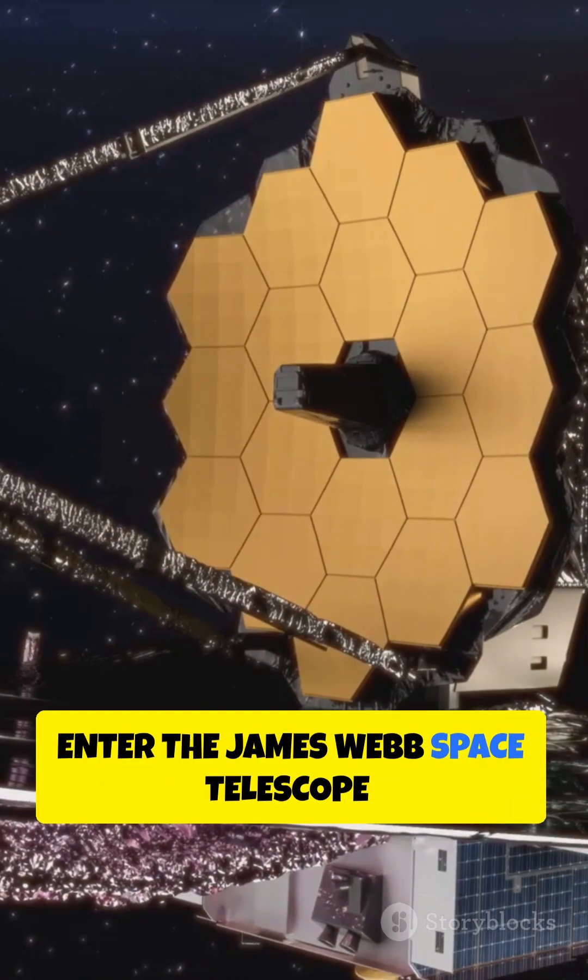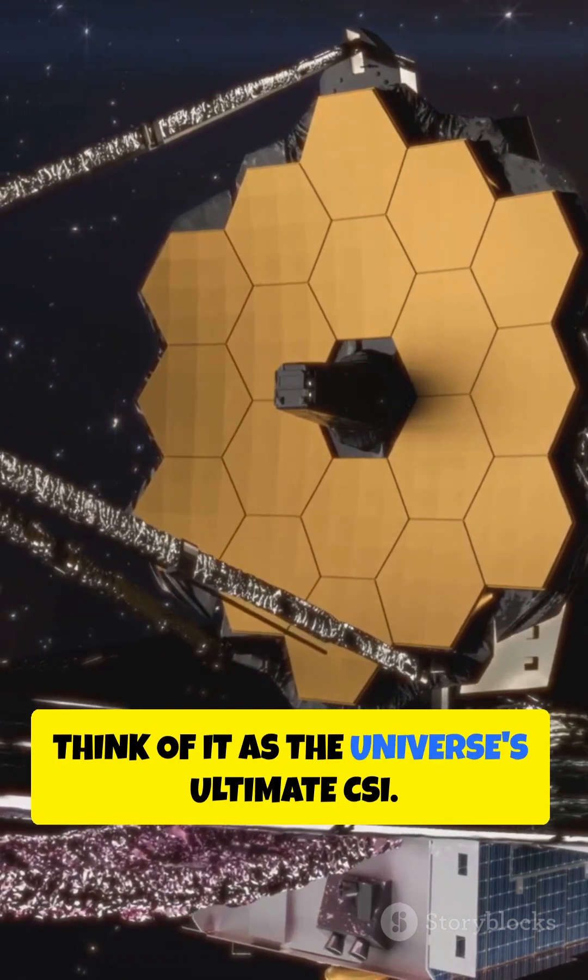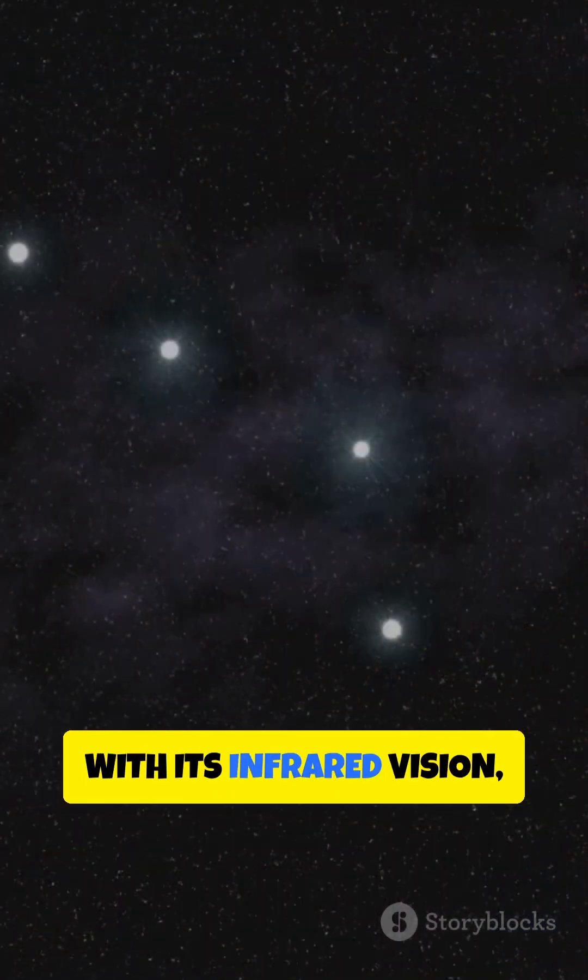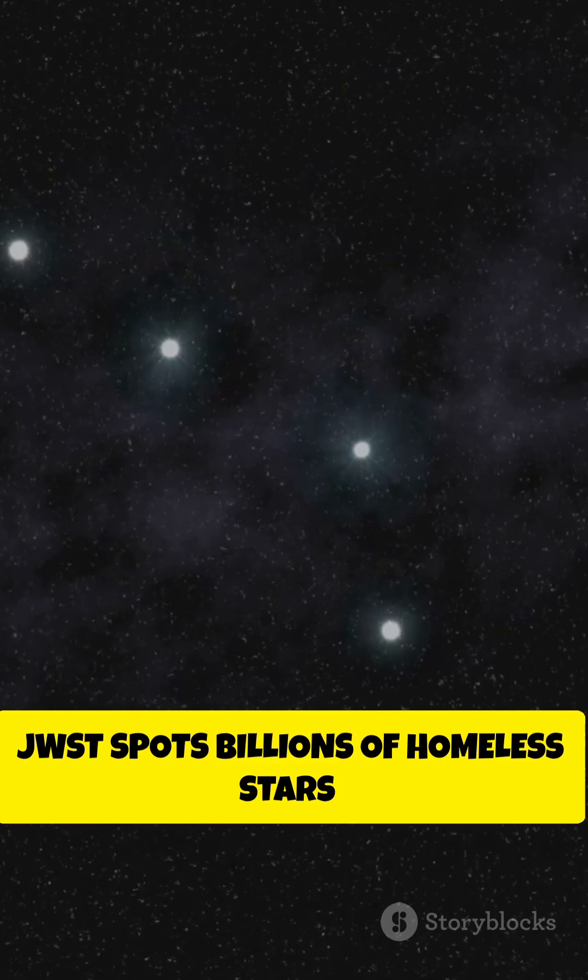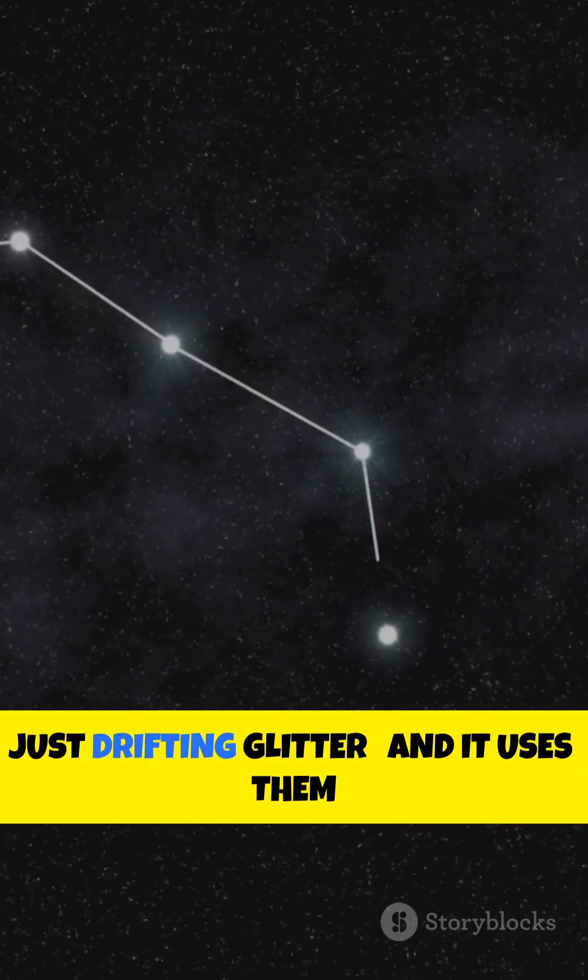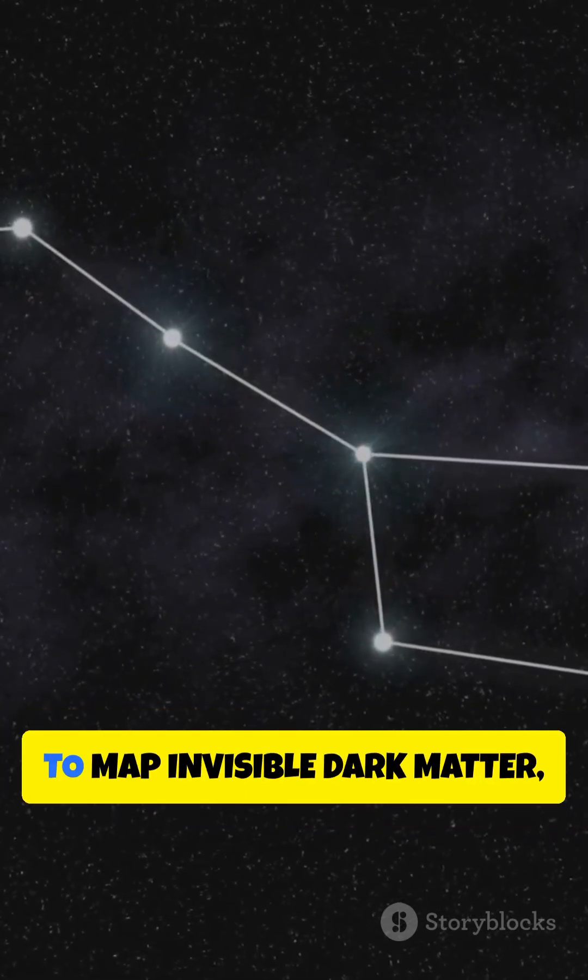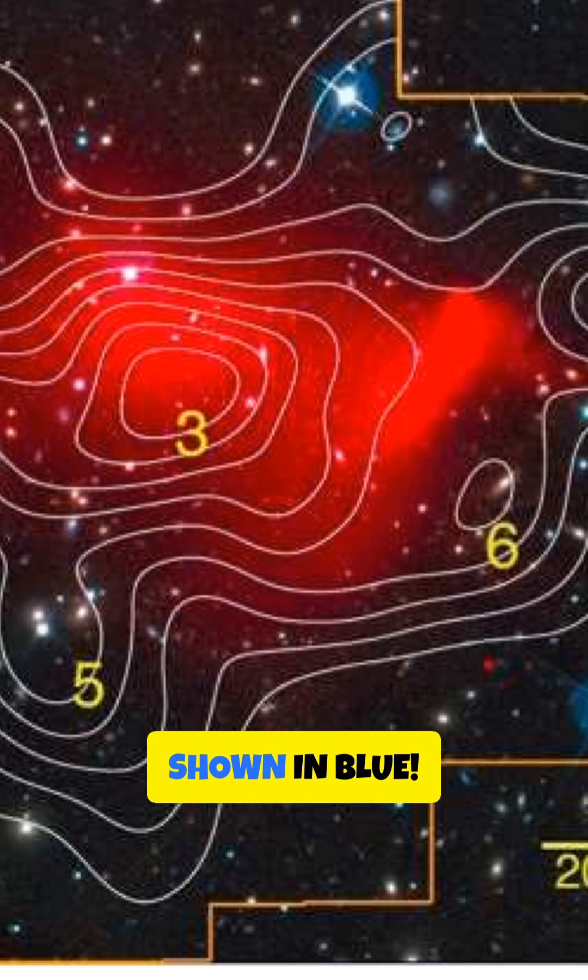Enter the James Webb Space Telescope. Think of it as the universe's ultimate CSI. With its infrared vision, JWST spots billions of homeless stars, just drifting glitter, and it uses them to map invisible dark matter, shown in blue.